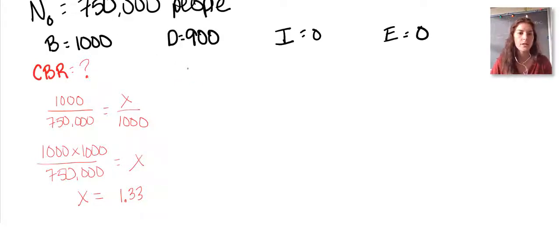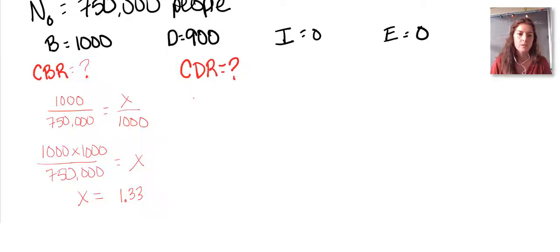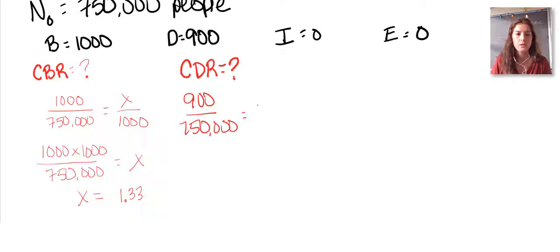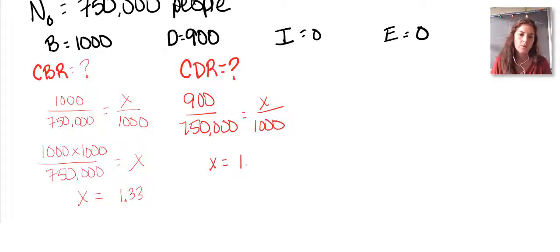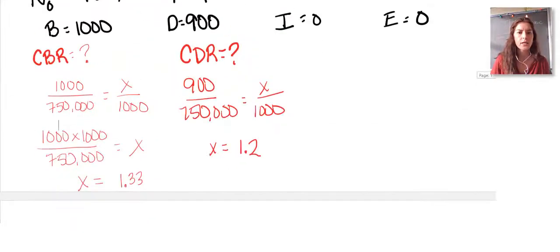Now let's calculate crude death rate. You can pause the video and try it yourself, then check your work. We have 900 deaths for every 750,000 people, which equals x over 1,000. Calculate that — crude death rate should be 1.2.